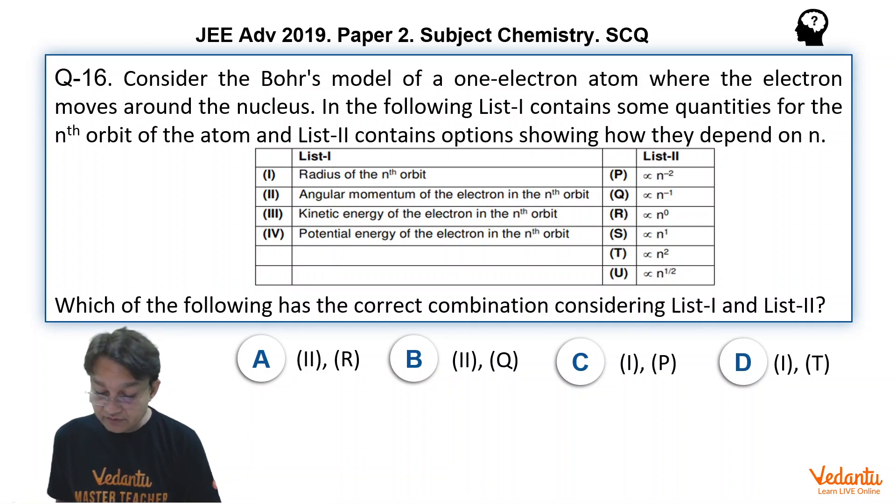And D, one is matching with T. One is matching with T is the perfect match. So D is the correct option.